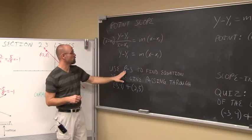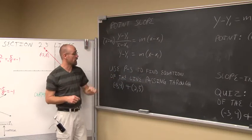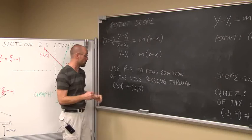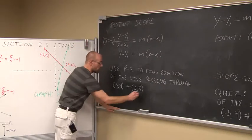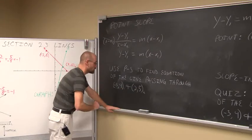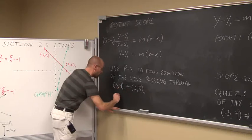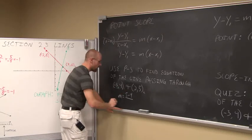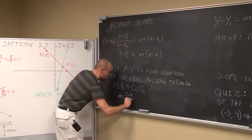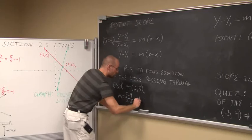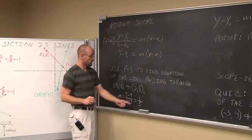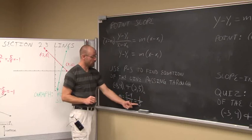Here's the question: use point-slope to find the equation of the line passing through two given points. Given two points, I can find the slope. I'll call the points: point 2 is (2, 5) and point 1 is (-3, 4). The change in y is 5 minus 4, over 2 minus negative 3. That's 1 over 2 plus 3, which equals 1 over 5. So the slope is one-fifth.